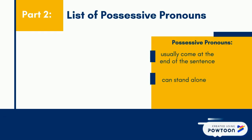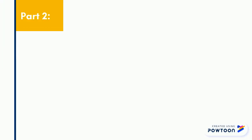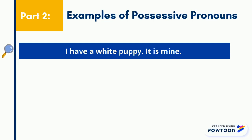Here's a list of possessive pronouns: mine, his, hers, its without an apostrophe, yours for singular and plural, ours, and theirs. Here are some examples. I have a white puppy — it is mine. He bought a new car — it is his.